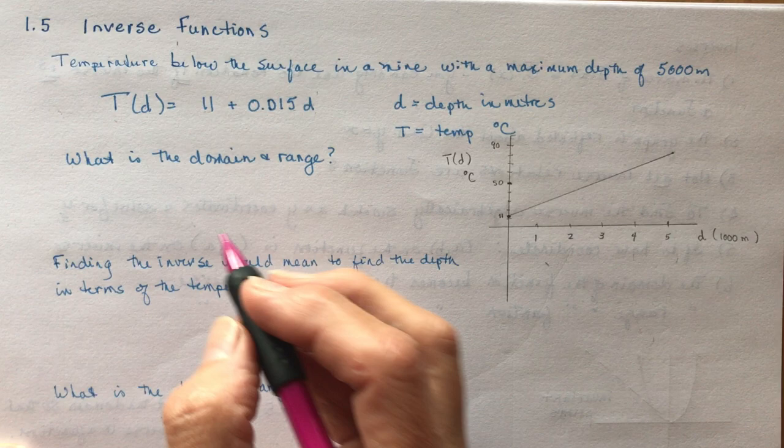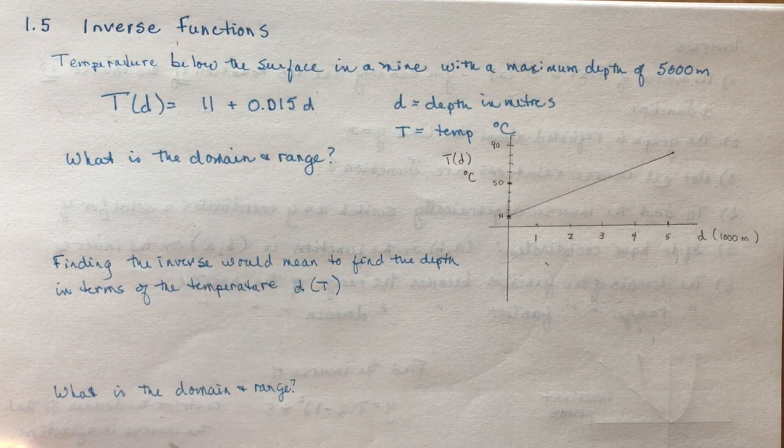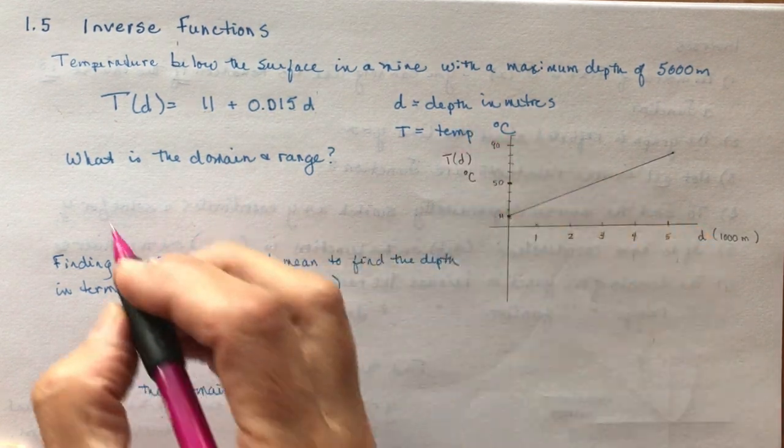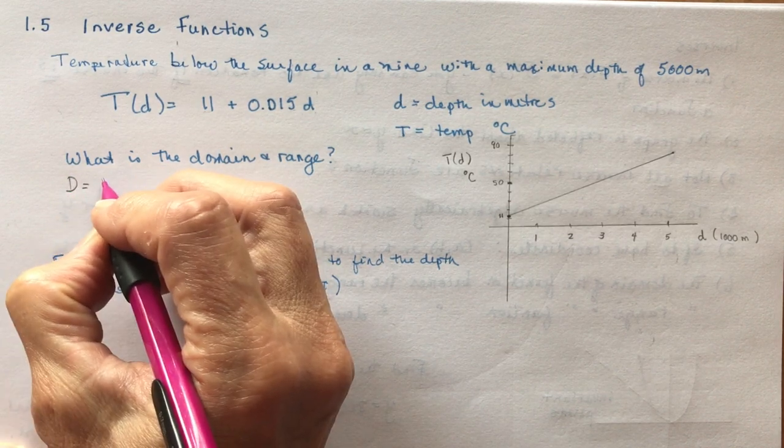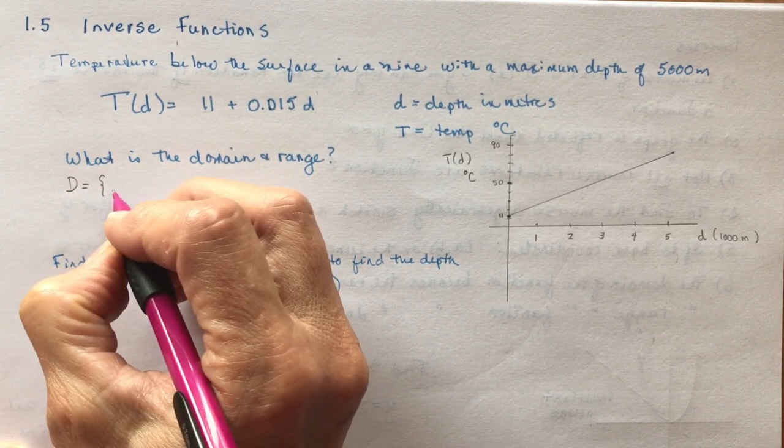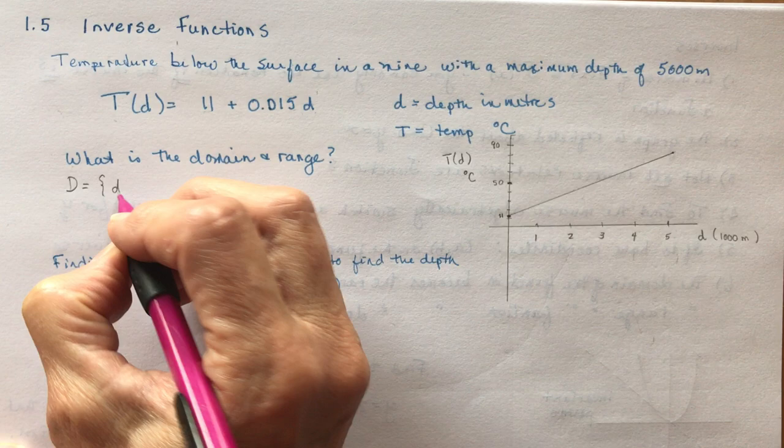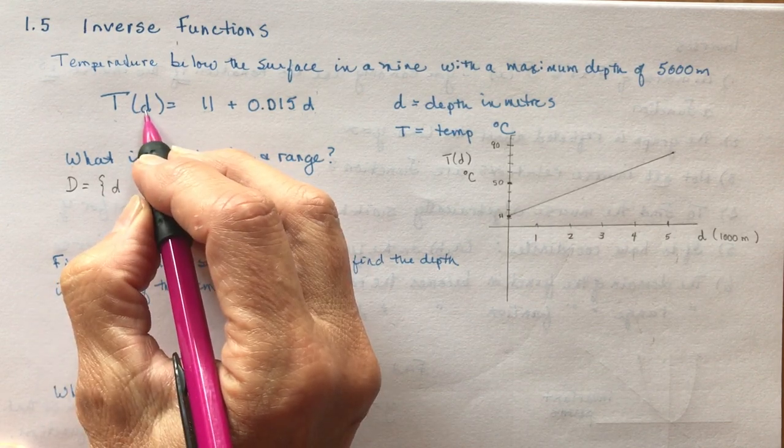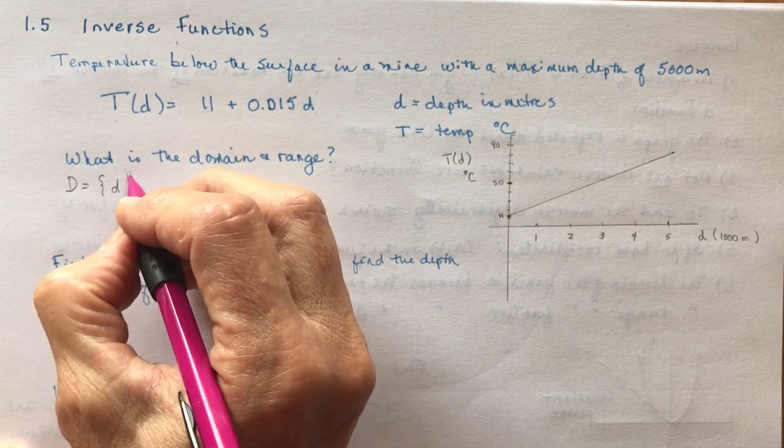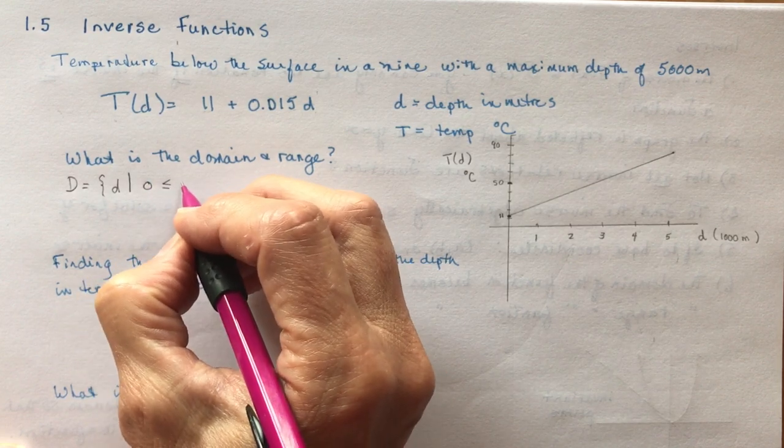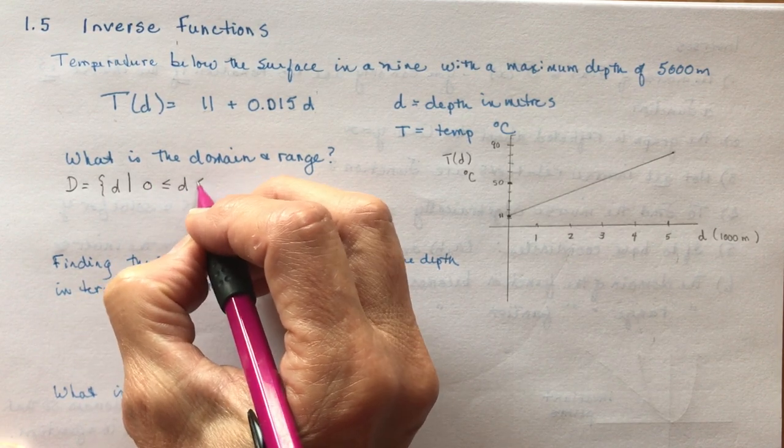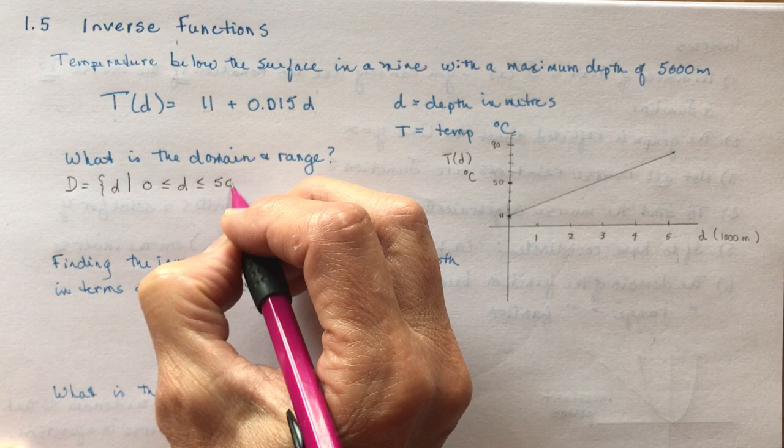In this case, there is a maximum depth of the mine of 5,000 meters. So that means the domain is going to be restricted by the depth of the mine. We're going to say the domain would be the set of all d's, because we're using d for the x-coordinate or independent variable, such that d goes between 0 and 5,000 meters.